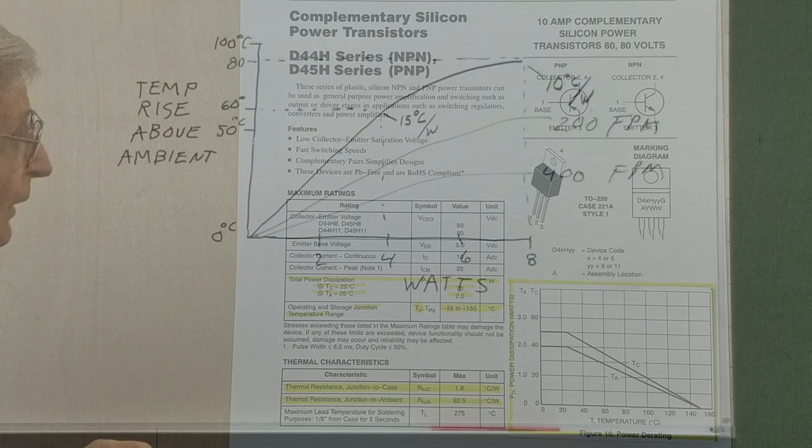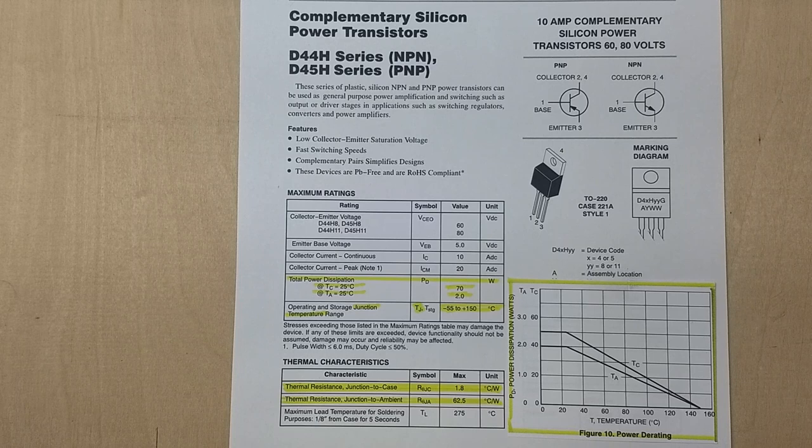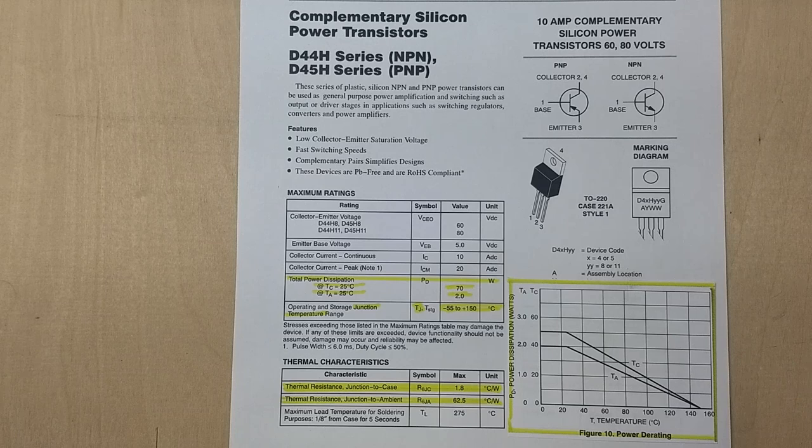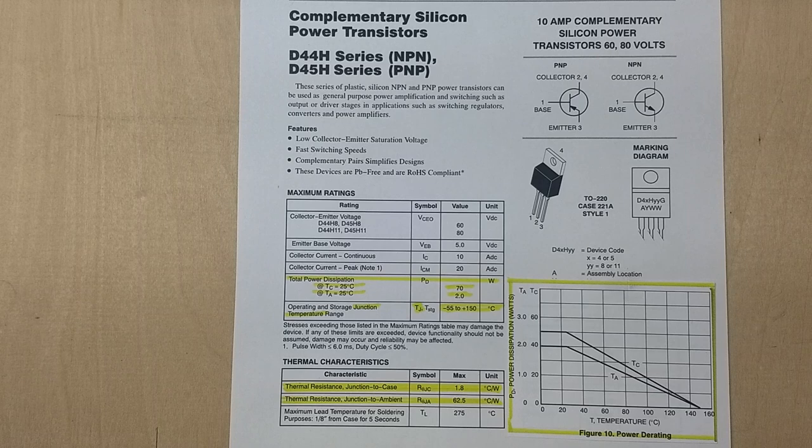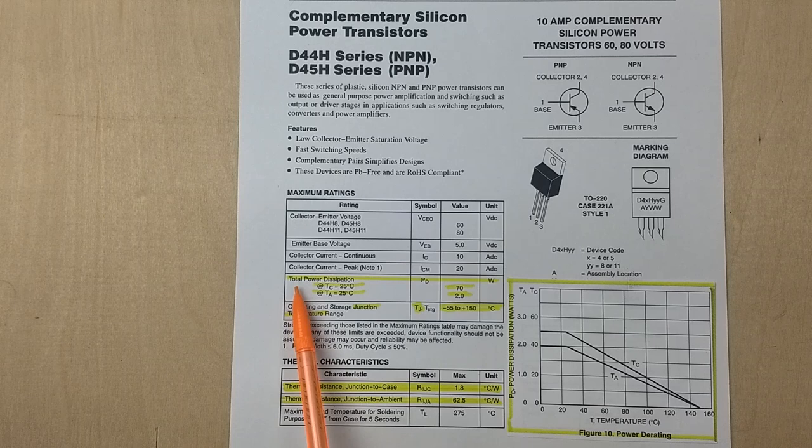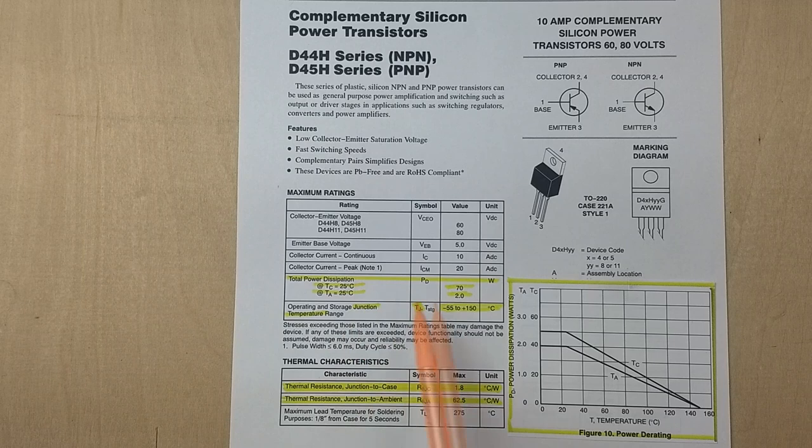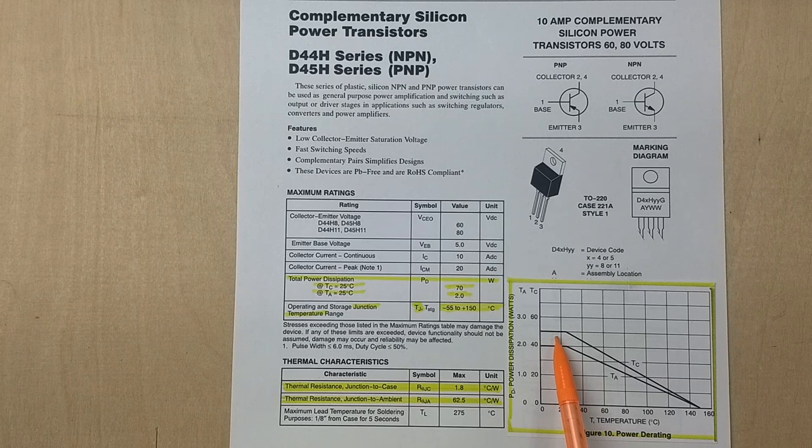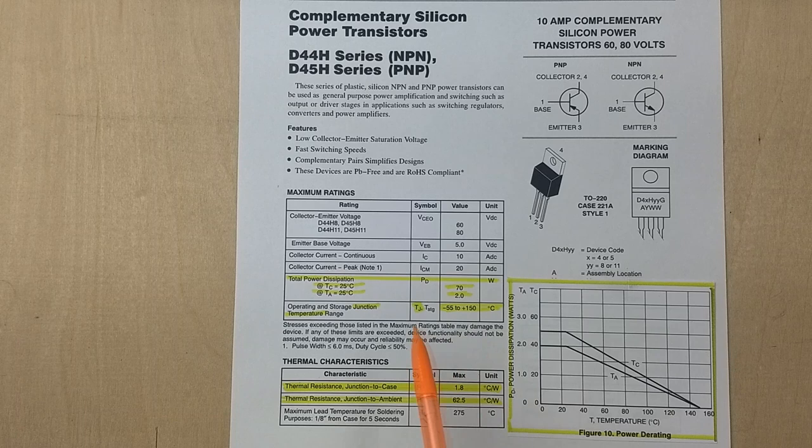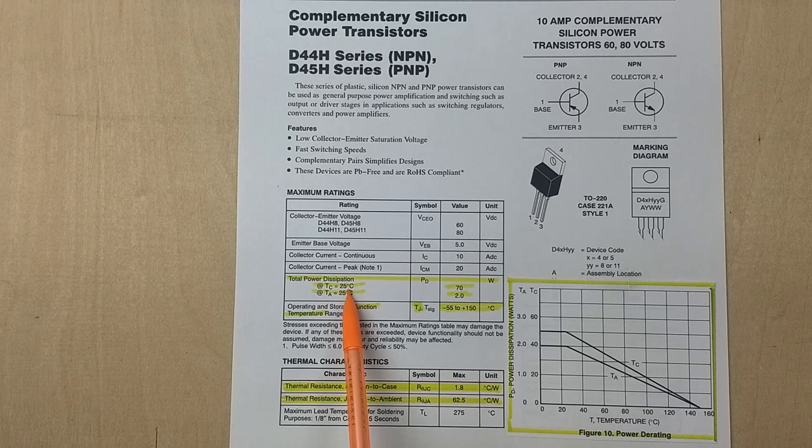Now let's look at a data sheet for a transistor. Normally when you look at a data sheet you're thinking about voltages and current ratings and things like that. But let's just concentrate on the thermal aspects. And here it's telling us the device can have a total power dissipation of 70 watts. We have a problem here because this chart shows a power dissipation of only 50 watts. So I would go with the more conservative rating.